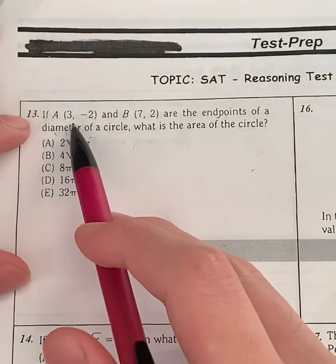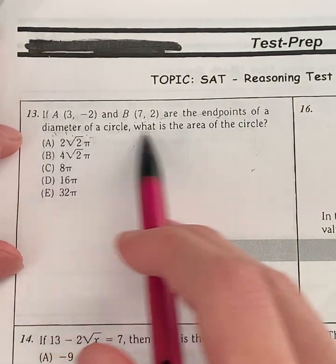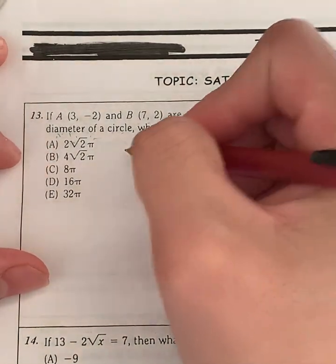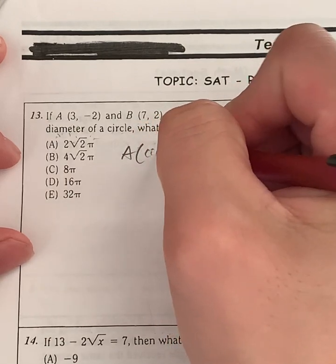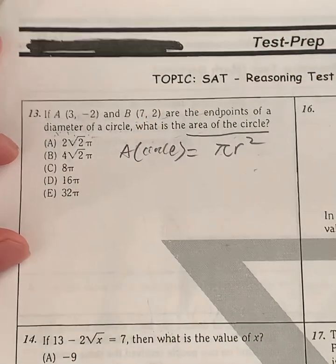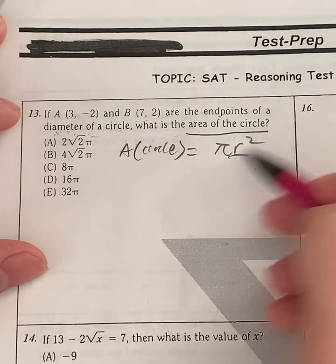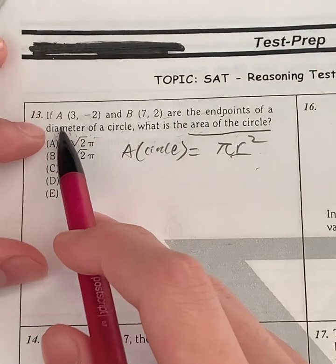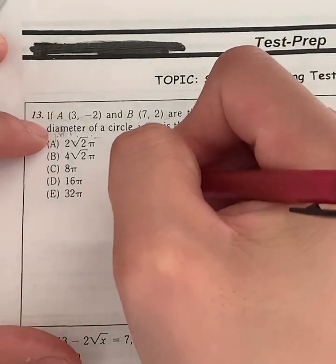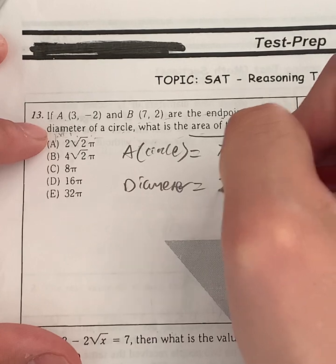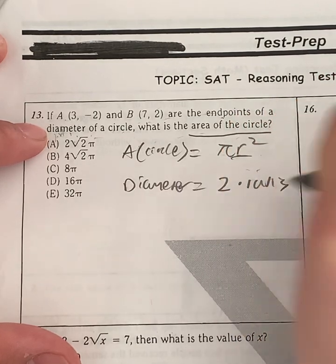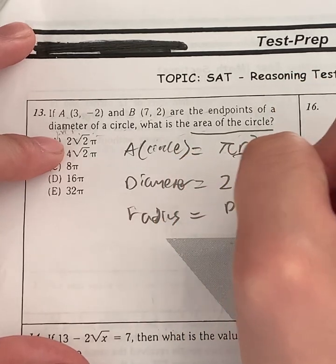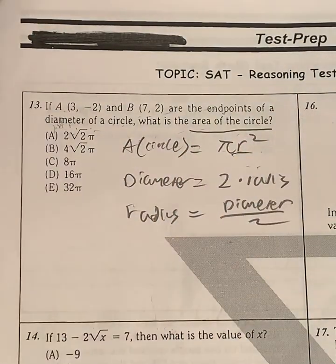Question 13. If A(3, -2) and B(7, 2) are the endpoints of the diameter of a circle, what is the area of the circle? We need to find the area of the circle using the formula: area of the circle equals πr². In this case, we need to find the radius r. How do we find that given two points which are the diameter? We need to find the distance and divide it by 2, because the diameter equals 2 times the radius, and proportionally, the radius equals diameter divided by 2. So let's find the diameter first.